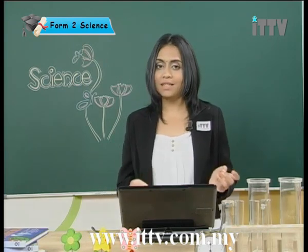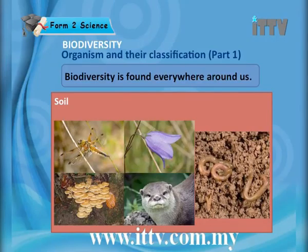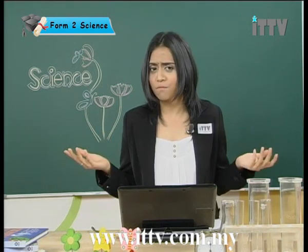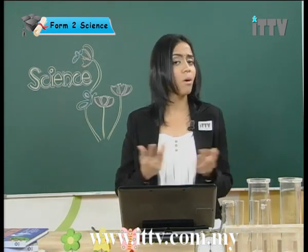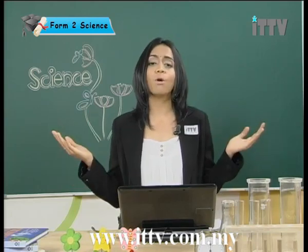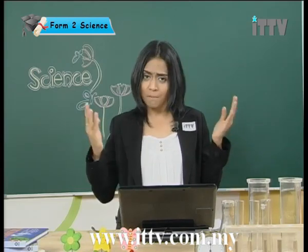Lastly, in soils we can find fungi, ants, earthworms, centipedes and millipedes — this is where they actually live. We have different types of animals and plants living in soils, polar regions, deserts, ponds and so on. This is all known as biodiversity.